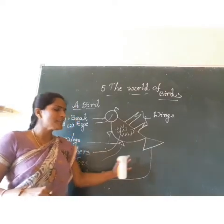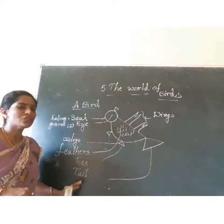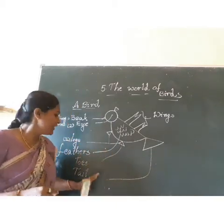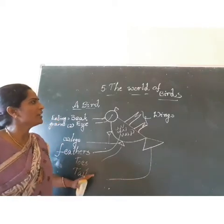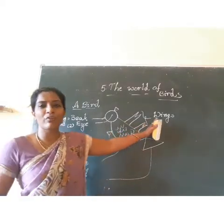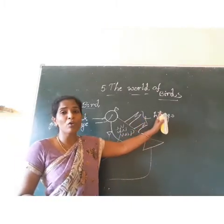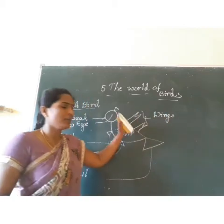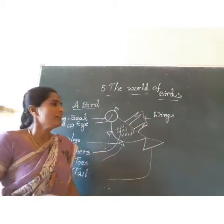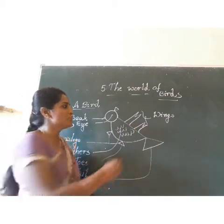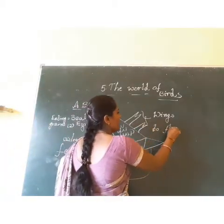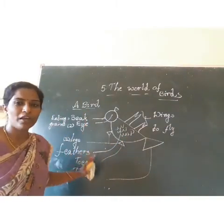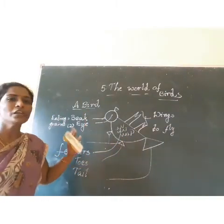And coming to the next part — toes. While catching any branch, the bird uses its toes. And after that, tail. When the bird is going in any direction, it uses its tail. And next part is wings. Of course, it is also a beautiful part of the bird. They use their wings to fly.